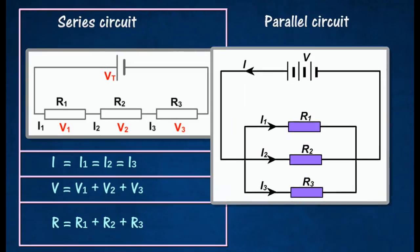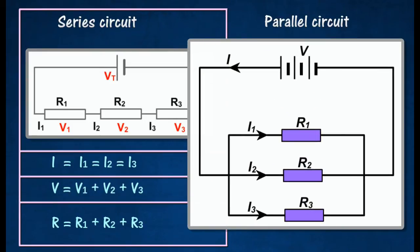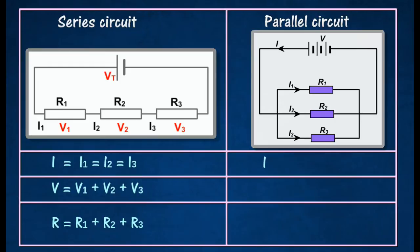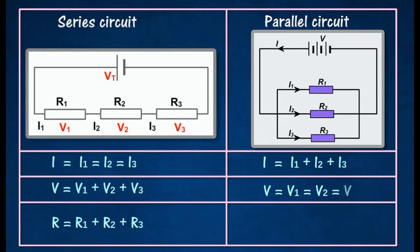For components connected in parallel, the following rules apply. The total current through the whole circuit is the sum of the current through each electrical component. The current in a parallel circuit branches out after leaving the battery and recombines before entering back in. The potential difference across each component is the same. The combined resistance across the components in parallel is less than either of the separate resistance across the components.